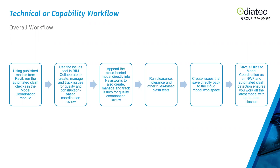Whether it's for quality or construction-based coordination review, you append cloud-hosted models directly into Navisworks and create, manage, and track issues from there as well. You can then run clearance, tolerance, and other clash-based tests inside Navisworks separately from Model Coordination. The key point is you can use Model Coordination and Navisworks side by side — it does not replace Navisworks.